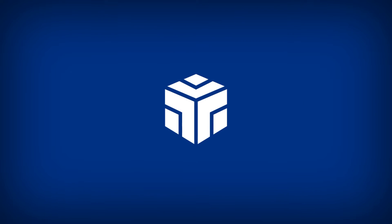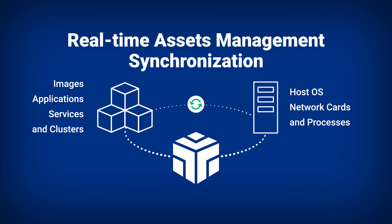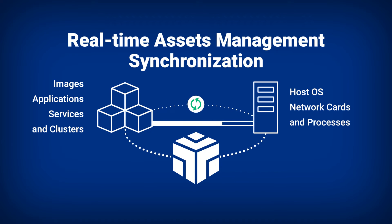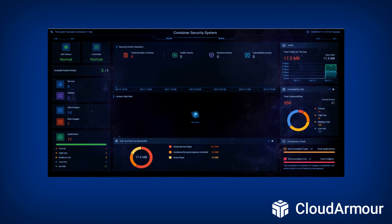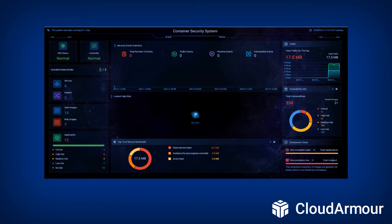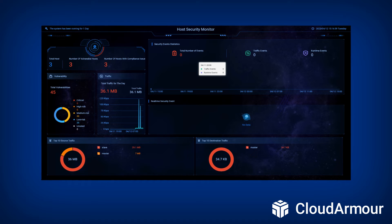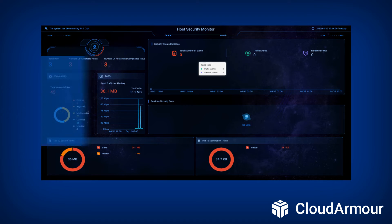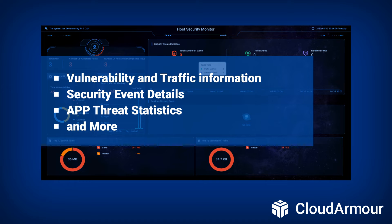Comprehensive visibility is provided with monitoring of containers and hosts. Cloud Armor's central management component synchronizes Kubernetes clusters and host assets in real-time, such as services, host OS, and more. The current cloud environment security posture is quickly assessed when viewing Cloud Armor's full-screen dashboard of host and container platforms, which displays granular details such as cloud environment system status and more.